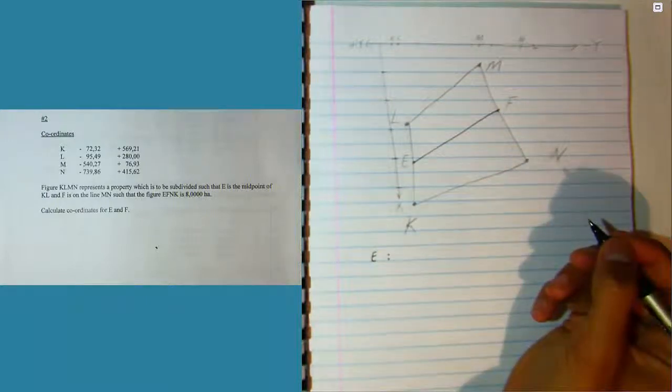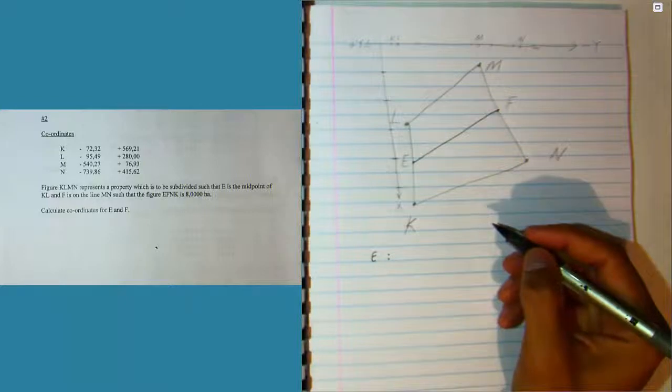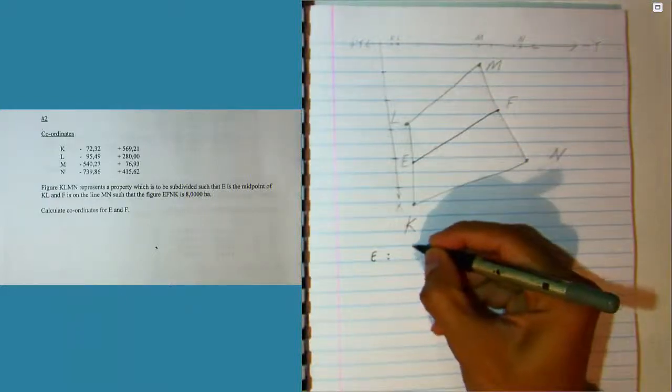The coordinates of E can be found by calculating the mean of the X and Y coordinates of points K and L.